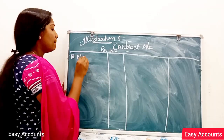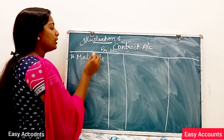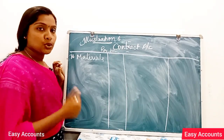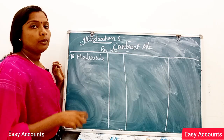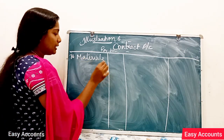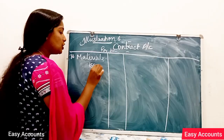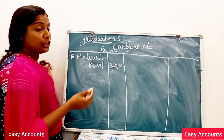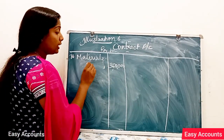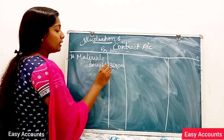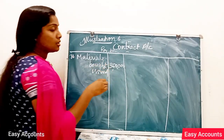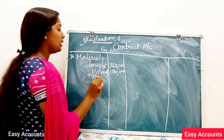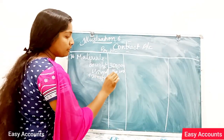What are the first expenses? The same materials. Here are the materials. The materials are issued from the store and transferred. The issue is the 3rd. Now, what are the materials? You can transfer them as a pin.